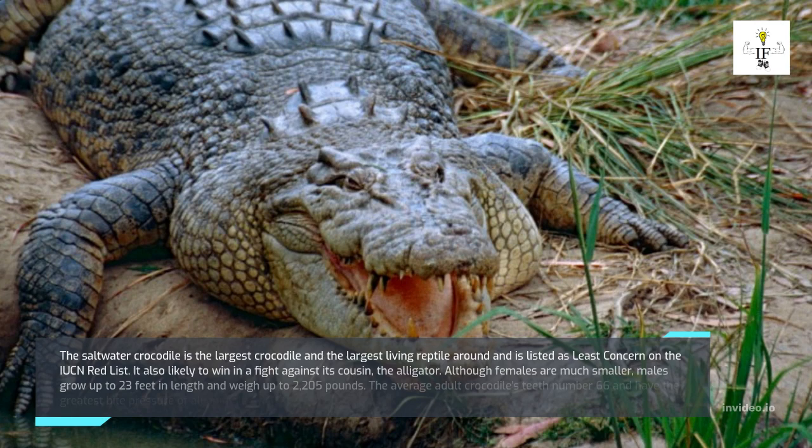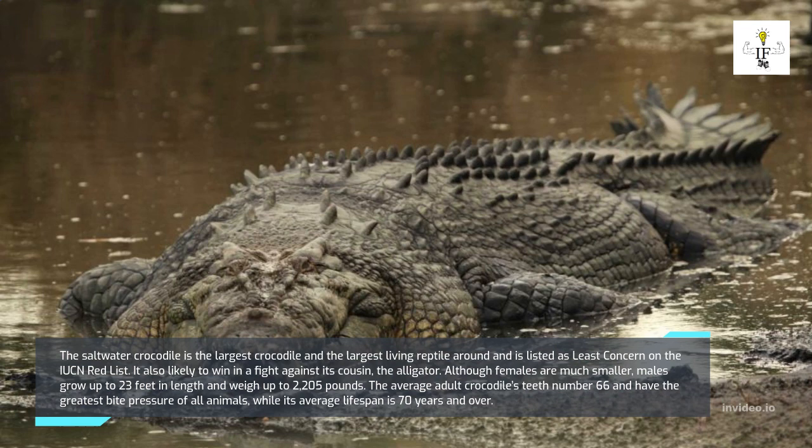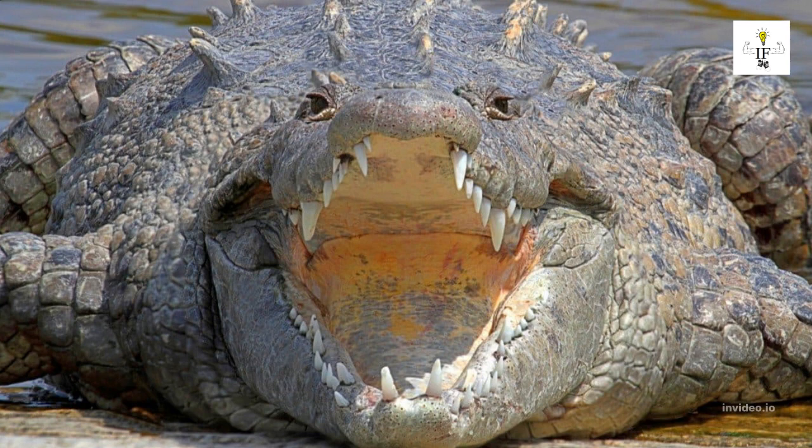The saltwater crocodile is the largest living reptile and is listed as least concern on the IUCN Red List. It would likely win in a fight against its cousin the alligator. Although females are much smaller, males grow up to 23 feet in length and weigh up to 2,205 pounds. The average adult crocodile has 66 teeth and has the greatest bite pressure of all animals, with an average lifespan of 70 years and over.